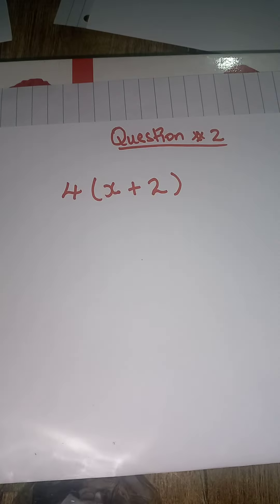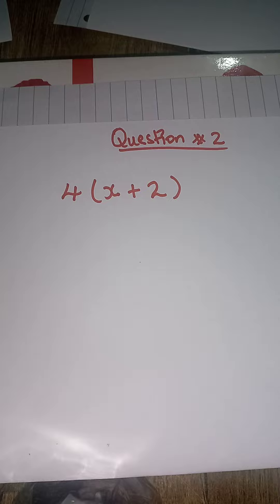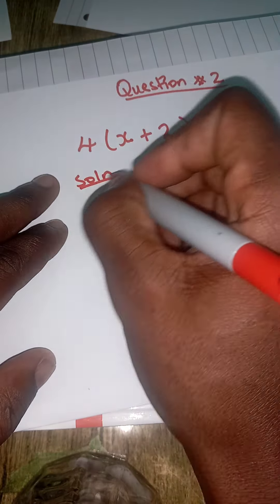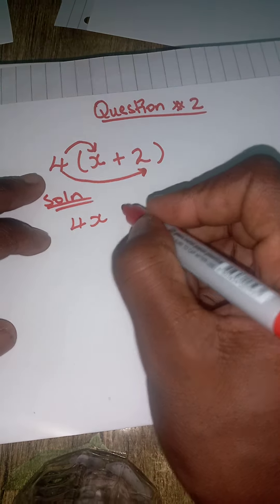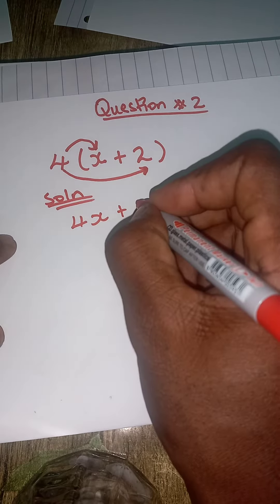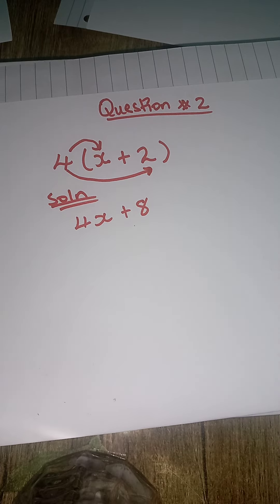Remember, we're supposed to use what is on the outside to multiply all that is on the inside of the bracket. So for this example: 4 times x is 4x, plus 4 times 2 is 8. That will be the final answer.